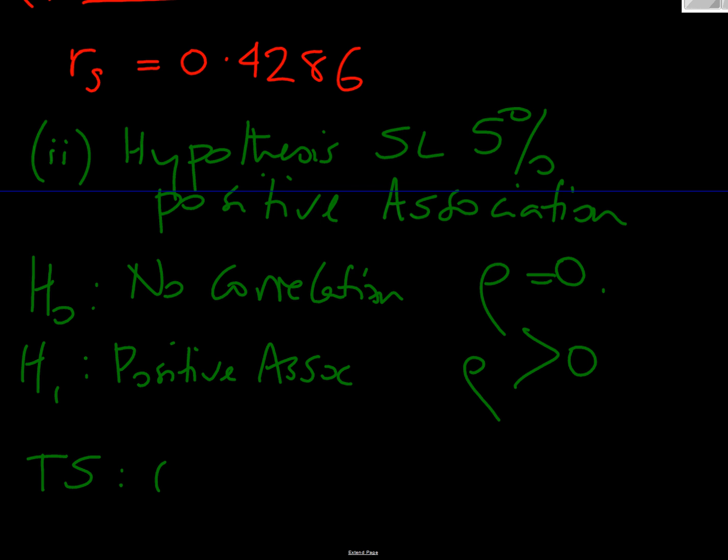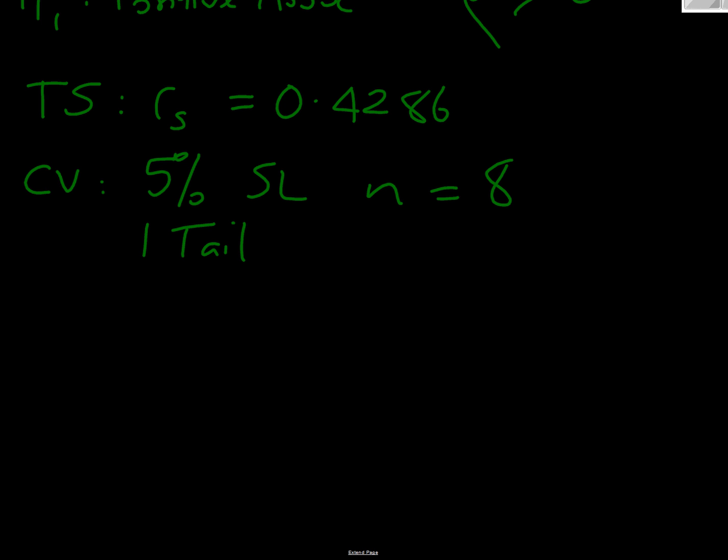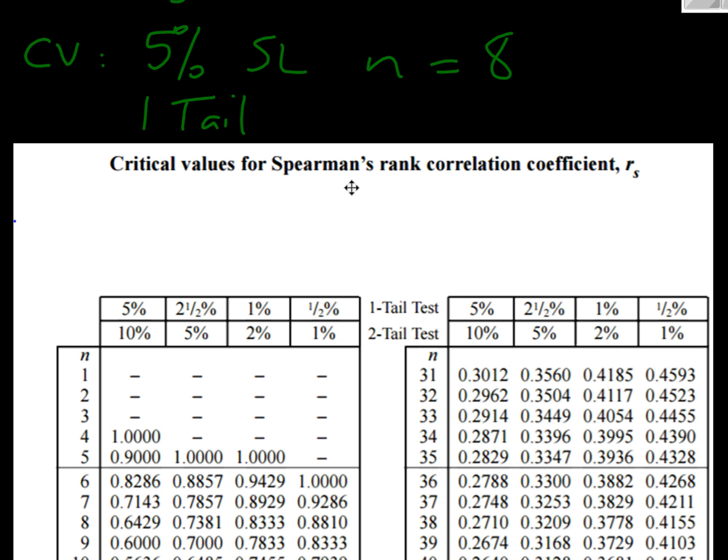What's our test statistic? Well, our test statistic is RS, which we've already worked out as being 0.4286. Where's our critical value? Well, we're looking at a 5% significance level. We've got N. How many contestants were there? There were eight of them. And we're on a one tail test, because we're only interested in rho greater than. So the next thing we just need to do is to look at our tables for this information.